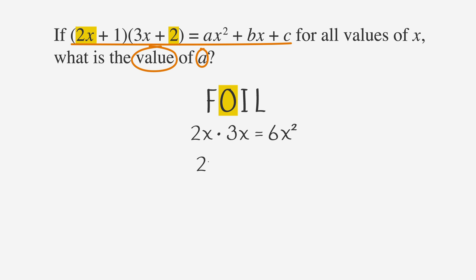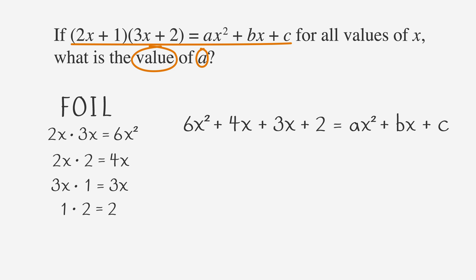Next, multiply the outside terms, 2x and 2, which gives us 4x. Then multiply the inside terms, 3x times 1, which gives us 3x. Finally, multiply the last terms, 1 and 2. We get 6x² plus 4x plus 3x plus 2 on the left-hand side of the equation. Add the 4x and 3x to get 7x. Now we have an x² term on each side of the equation, so the coefficients of the x² terms must be equal to each other. That means that a must equal 6. Since this is the only coefficient we're asked to solve for, there's no need to find b or c. The SAT question asks, what is a? And the answer is 6.